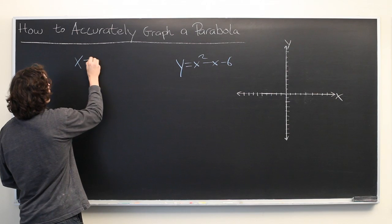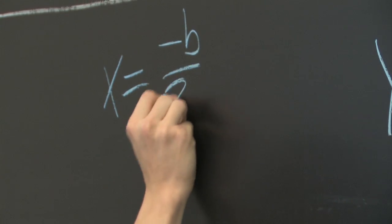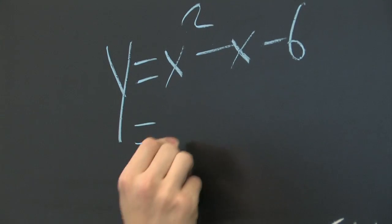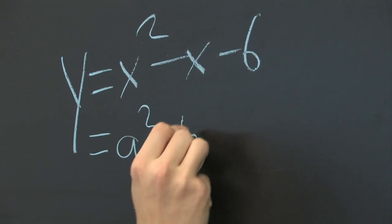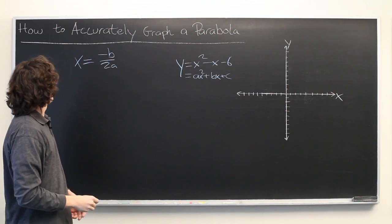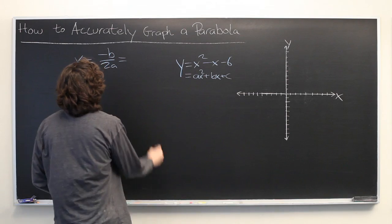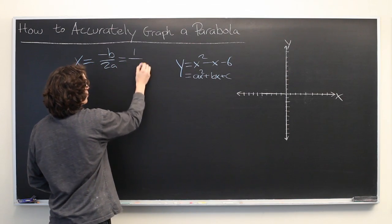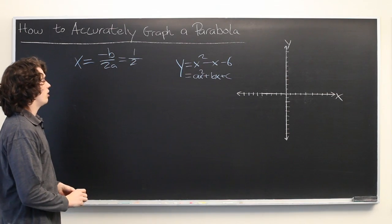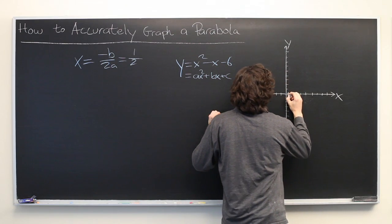The x-coordinate of the vertex is given by negative b over 2a. We're assuming that we are given a parabola of the form ax squared plus bx plus c. So, in this case, our b is negative 1, so negative times negative 1 is just 1, and our a is positive 1. So, we end up with an x-coordinate of 1 half. Let's go ahead and mark that down.